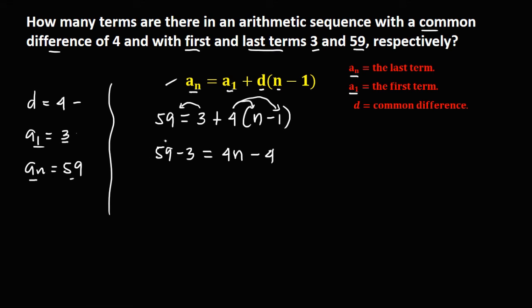Then simplify, so 59 minus 3, this one is 56. Then transpose this negative 4, this becomes positive 4, then equals 4n. Then this 56 plus 4, this one is 60, equals 4n.